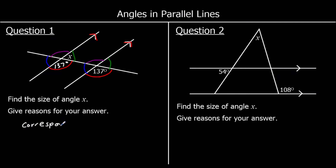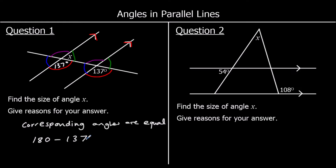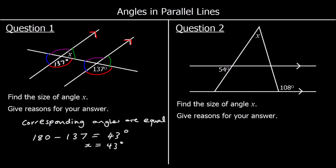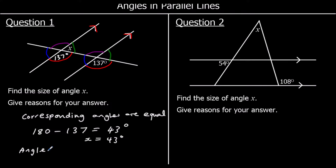Corresponding angles are equal. And then we could say angles on a straight line add up to 180 degrees. So X and 137 are on a straight line, so 180 take away 137 is 43. So X must be 43 degrees.